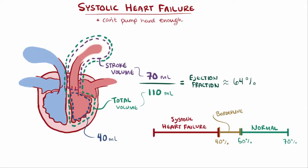So in our example, if the total volume of the left ventricle was 110 milliliters but only 44 milliliters was pumped out with each beat, then you have 44 milliliters divided by 110 milliliters, which is 40%, and we would say that person is in systolic heart failure.